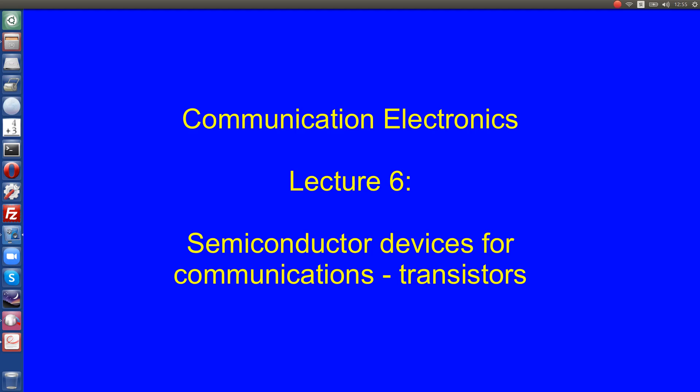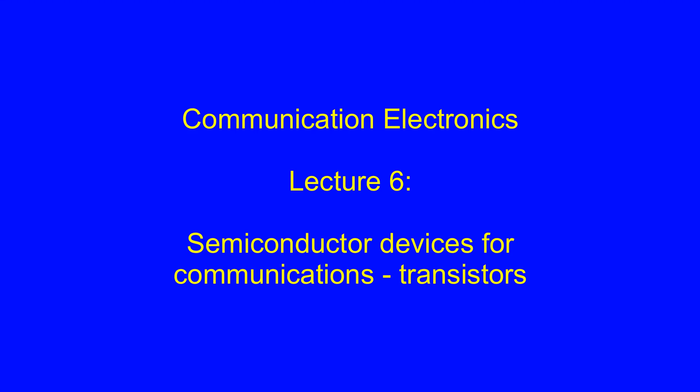This is the second part of the lecture on semiconductor devices for communications, and in this lecture we are going to talk about transistors. Last week we were talking about semiconductor diodes, and mostly semiconductor diodes were used as nonlinear elements — as nonlinear components when we required rectification, when we required demodulation, when we required mixing of two different radio frequency signals. That's where diodes come from.